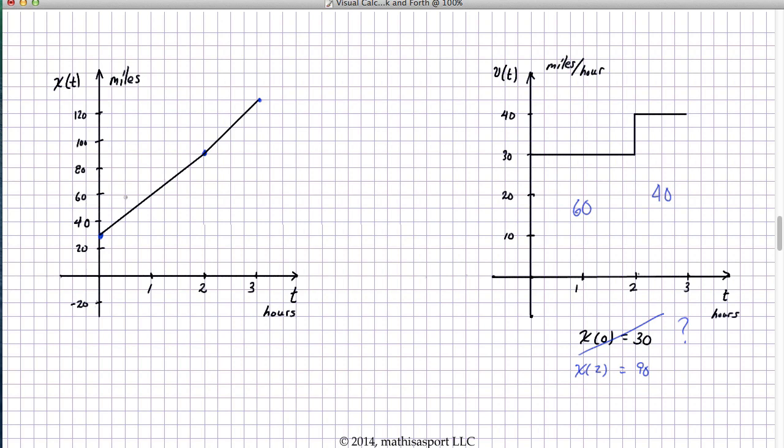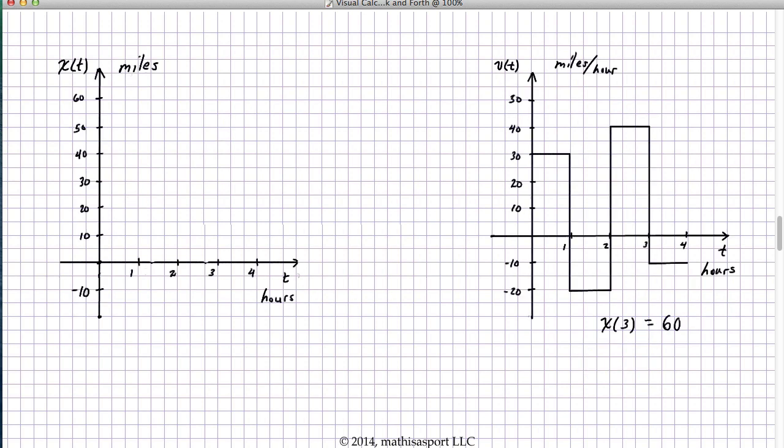And, in fact, we can show that this works in general. Namely, the idea of initial condition doesn't have to be at T equals 0. In fact, I can pick any point in the domain and specify that X as a function of that particular point and still reconstruct the entire X versus T graph given the V versus T graph. But to do it systematically, we're going to need to be a little more careful about how we calculate signed area.